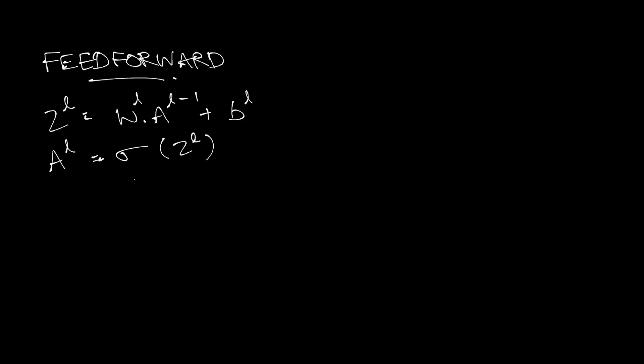In the previous video we saw how a neural network works, the general form of the feed-forward equation, and we learned some general notations and saw how we can predict the output using matrices for m samples in one single iteration. The feed-forward equation is: Z^L, where L is the layer number, equals the weights multiplied by the output from the previous layer plus a bias, and the output of this layer is given by an activation function applied to Z^L.